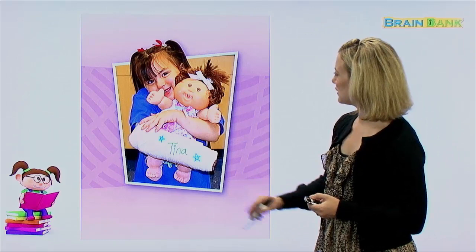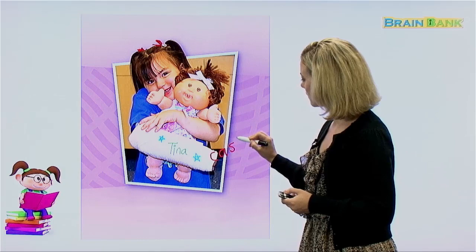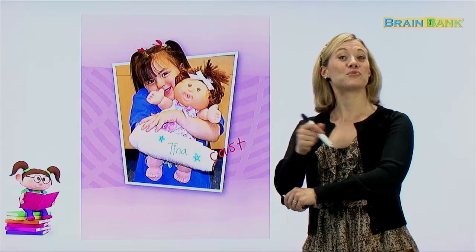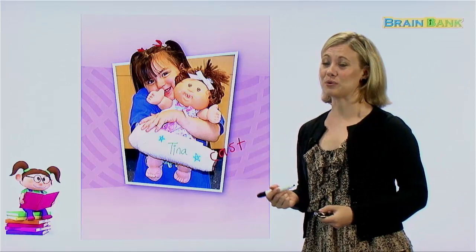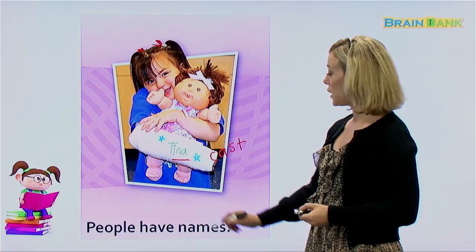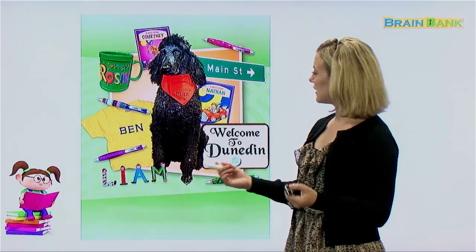Here's a cute little girl, and she's holding her doll. And what's that on her arm? That we call a cast. If you break your arm, you have to get a cast on it to make it better. Sometimes casts can be fun because you can write on your cast, and your friends can write on your cast too — maybe 'get well soon.' In this case, this little girl wrote her name on her cast, and her name is Tina. So people have names. Let's read it all together: people have names. Very good.